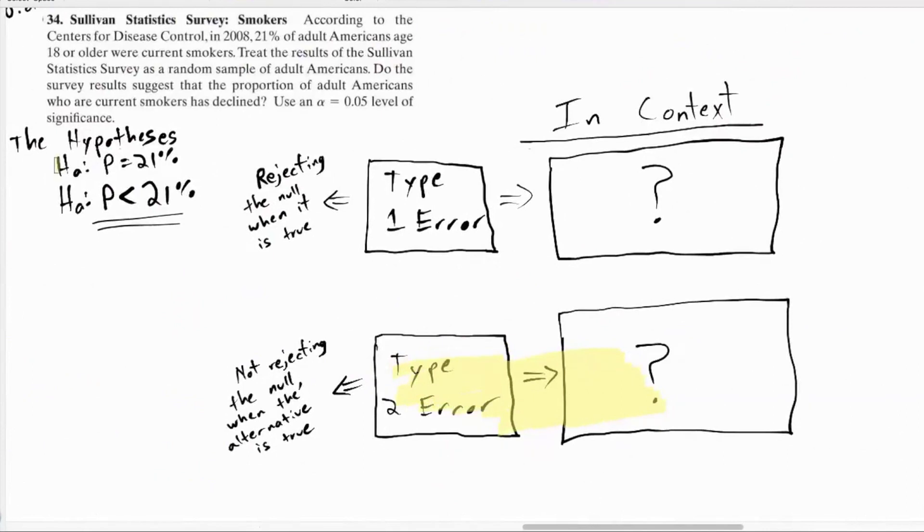I'm going to show another example and have you interpret type one error and a type two error. Here's a problem with smokers. We're wondering, has the proportion of adult Americans who smoke decreased from 21%? Here's definitions of a type one error and a type two error. Can you translate what those mean in terms of this problem and this data? You should be talking about adult Americans smoking. We want to mention the fact that we're testing to see if it decreased. It's slightly better to describe the null as it hasn't decreased rather than it's exactly 21%. We use the math of it being exactly 21%, but this really needs to cover everything else. Either it has decreased, that's the alternative, or it has not decreased, that's the null.